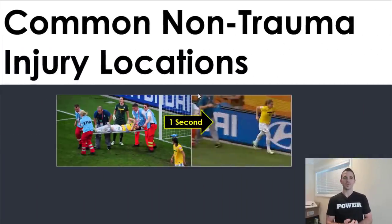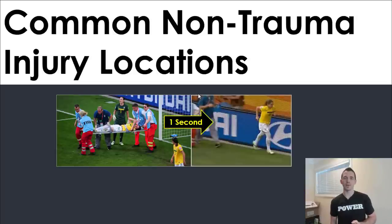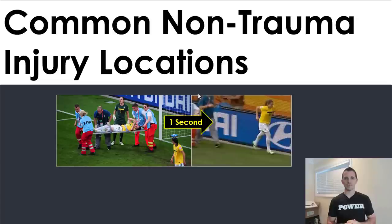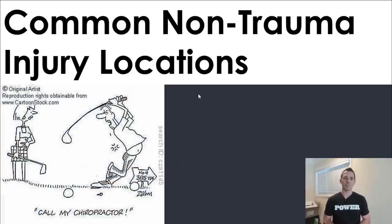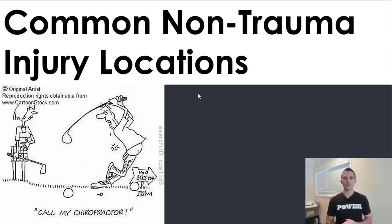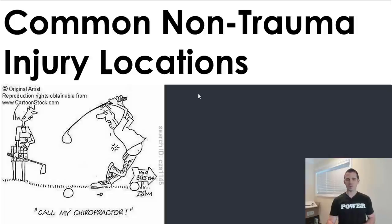Lastly in the sport section, look at common non-trauma injury locations. I can't do anything about one of my fighters getting kicked in the head — that's not part of my equation. But I can address a strained hamstring from running, a blown Achilles, or a chronically achy shoulder. We're talking about non-trauma-induced, overuse injuries. In golf, you'd probably focus heavily on the low back because of all the twisting and torsion, especially with poor abdominal and glute activation — lots of low back strains there.